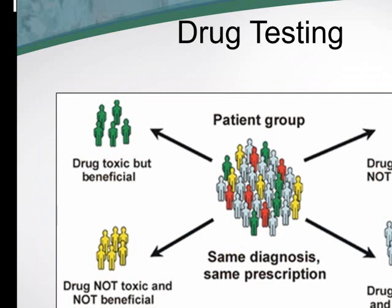Drug testing occurs this way: you take a population of people, treat them with the drug, and look at efficacy and toxicity. There's a sub-population where the drug is toxic and has absolutely no benefits. There's a group that has no reaction — not toxic and not beneficial. And there's another group where the drug is toxic but it is beneficial. You want to eliminate drugs that cause toxicity with no effect, get down to where the drug is not toxic but beneficial, though sometimes the best you can hope for is that the benefits outweigh the toxicity.